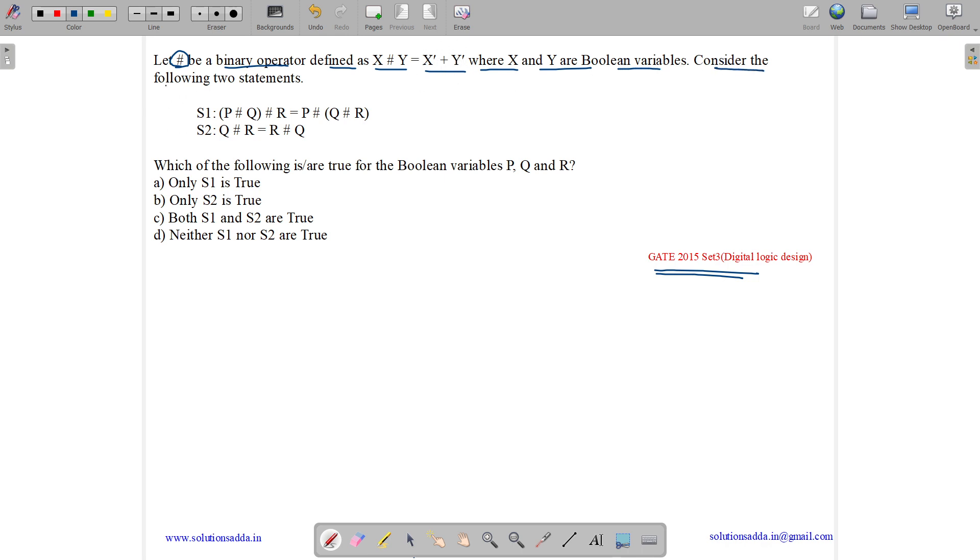Consider the following two statements. S1 states (P hash Q) hash R equals P hash (Q hash R) with parenthesis change, so it's basically the associative property. S2 states Q hash R equals R hash Q, which is basically the commutative property.